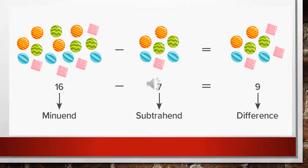Now, like any other operation, subtraction has its own parts and names at every stage. The numbers we have in total — the total figure we have — for example in this slide we are having 16 numbers as the minuend. Now we have to subtract 7 out of these 16. The number we are going to subtract is called the subtrahend — in this slide, 7 is the subtrahend. After subtracting 7 out of 16, whatever number remains is called the difference.